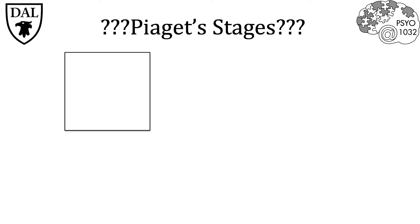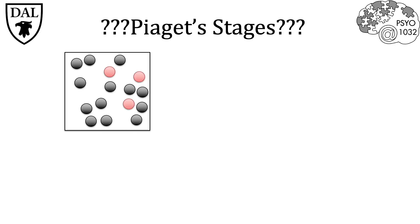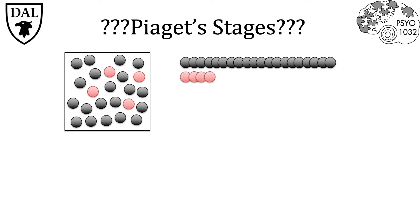Let's look at an experiment illustrating an infant's ability to understand basic statistics and probability. Researchers took many black balls and very few red balls and put them into a box in front of eight-month-old infants. It was important that they did this in front of the infants so they could see the proportion of black to red balls going into the box. The infants were actually able to see and recognize the different proportions and therefore make basic statistical predictions based on this information.